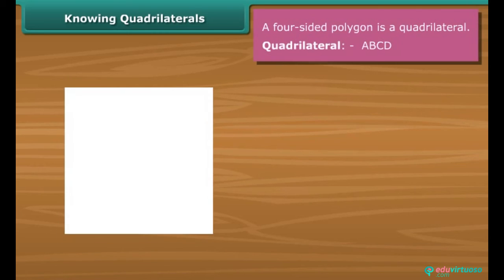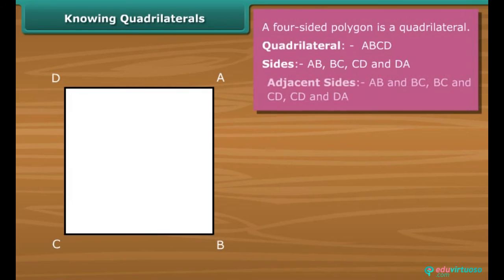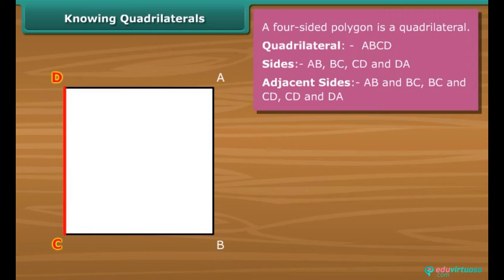In quadrilateral ABCD, four sides are AB, BC, CD and DA. Side AB and BC, BC and CD, CD and DA are adjacent sides.